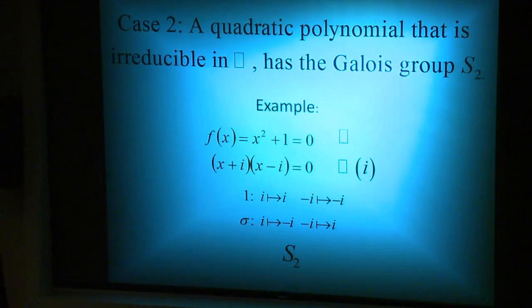Case 2 is a quadratic polynomial that is irreducible in the rational numbers. As an example, take the polynomial equation f(x) = x² + 1 = 0. This is irreducible in the rationals and is of degree 2.